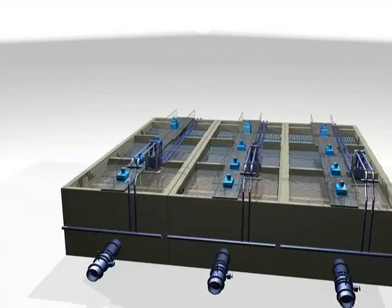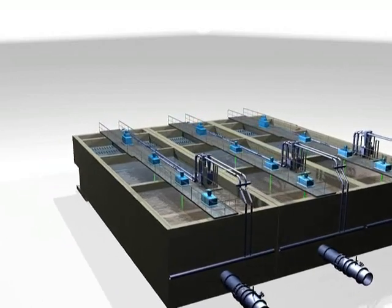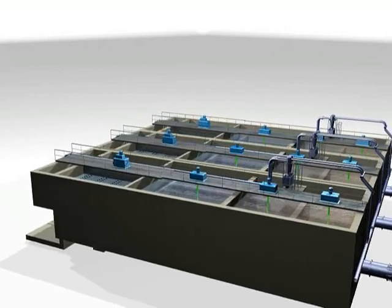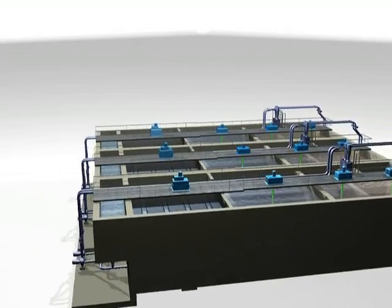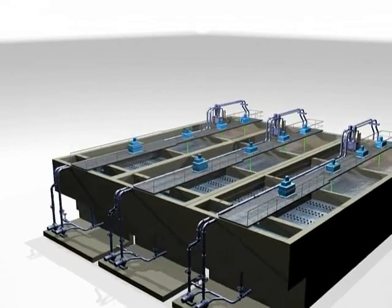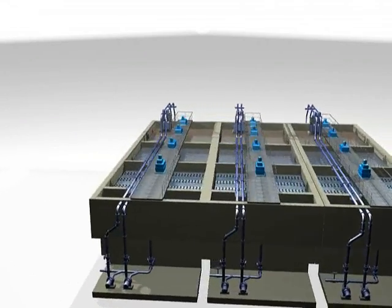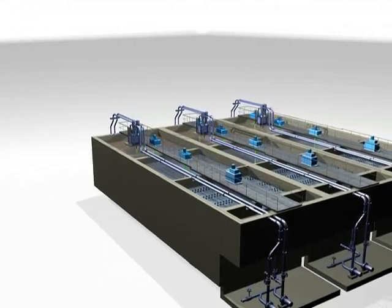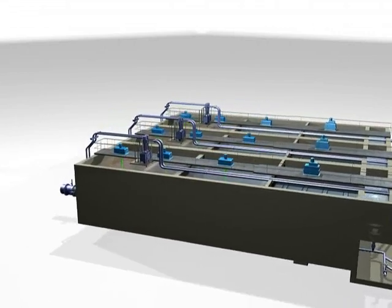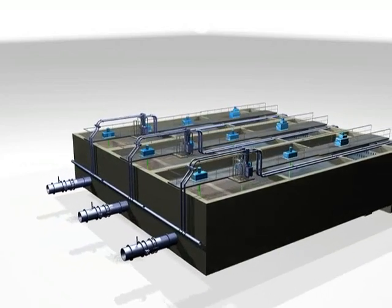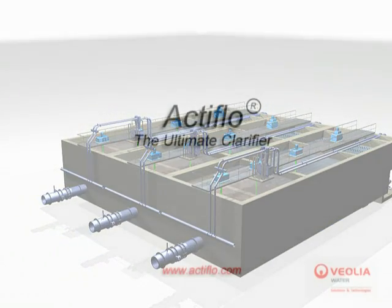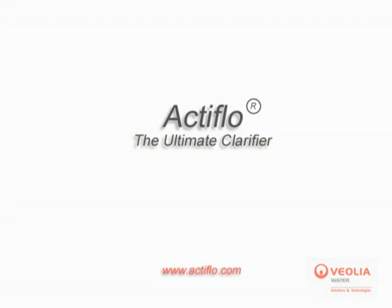Design rise rates in actiflow range between 60 and 150 meters per hour. Combined with the short flocculation time, they translate into extremely compact system footprints, which lead to significant savings in total project costs. Together, these unique features make Actiflow the most advanced and efficient clarification process on the market today.